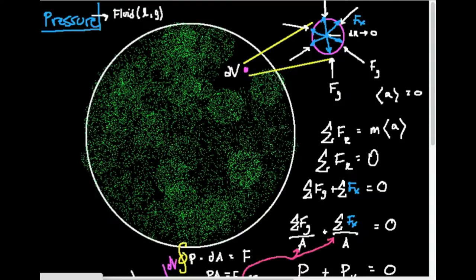I have right here a perfectly spherical container filled with whatever this green gas is. I'm going to introduce you to a concept called internal equilibrium. What does internal equilibrium mean? It means that for this volume — and the volume of a sphere is four-thirds pi r cubed — the pressure should be identical at any point. The temperature should be identical at any point. And technically, the velocity of any gas molecule should also be identical.